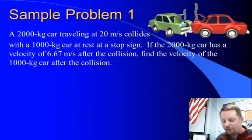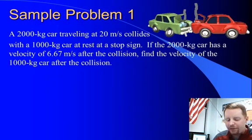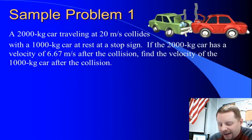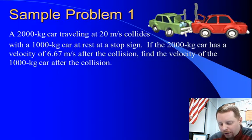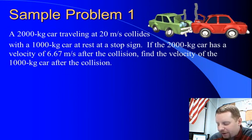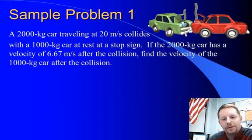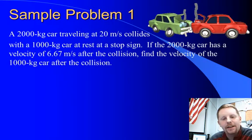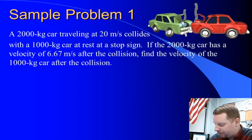Let's see how this works in practice. If we have a 2,000 kilogram car traveling at 20 meters per second and it collides with a 1,000 kilogram car at rest at a stop sign, and the 2,000 kilogram car has a velocity of 6.67 meters per second after the collision, find the velocity of the 1,000 kilogram car after the collision.